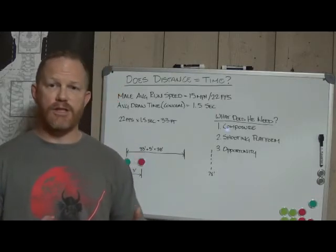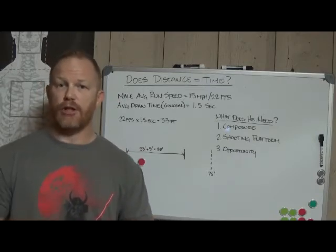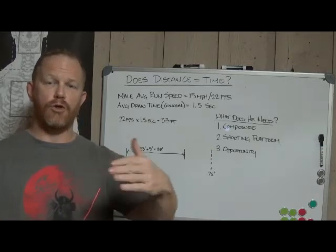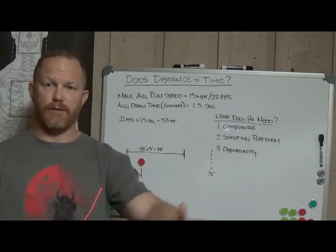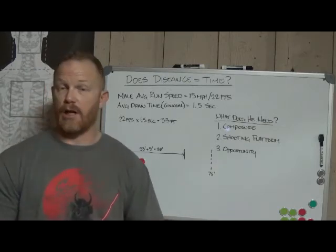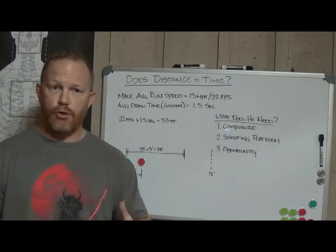The second thing is he's going to need a shooting platform. We've talked a little bit about that shooting platform. Regardless of how you're shooting, you're going to need a shooting platform of some kind in order for you to be able to place effective rounds onto a target. The third thing that he's going to need is opportunity. In order for him to be able to shoot me, he's got to have the opportunity to shoot me.